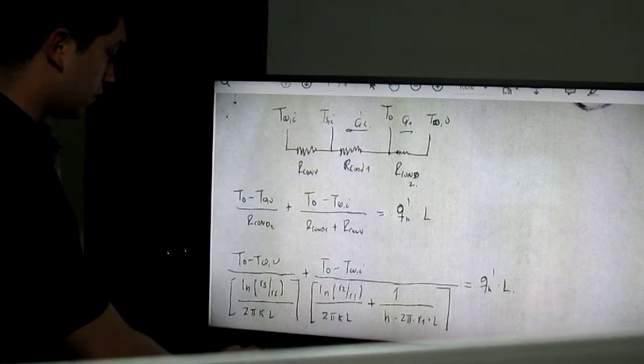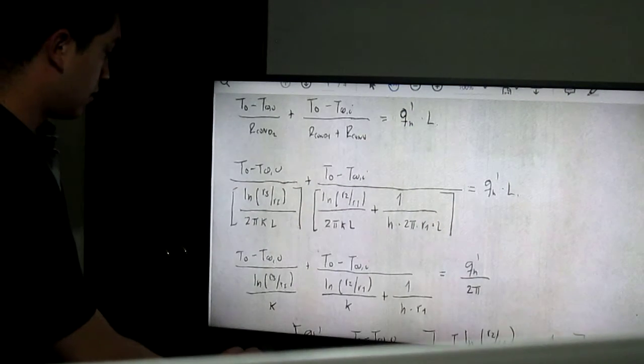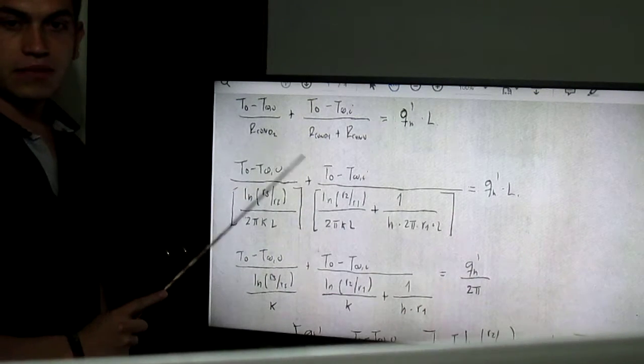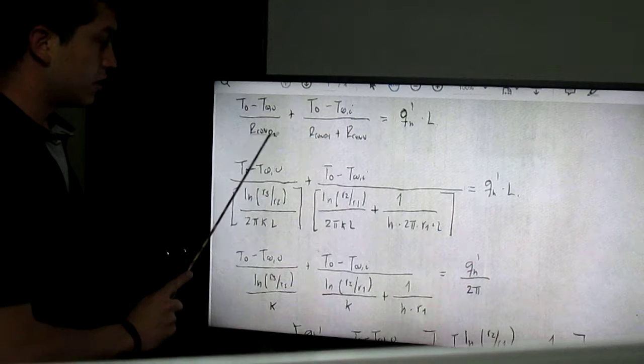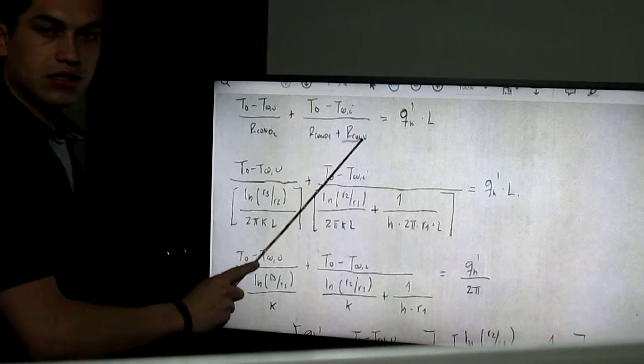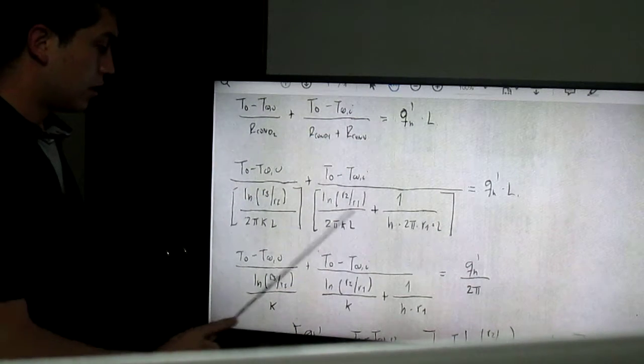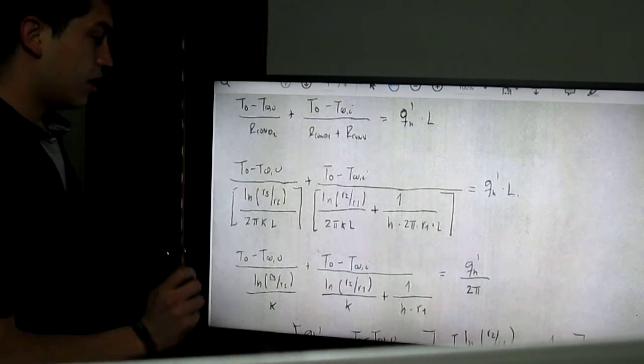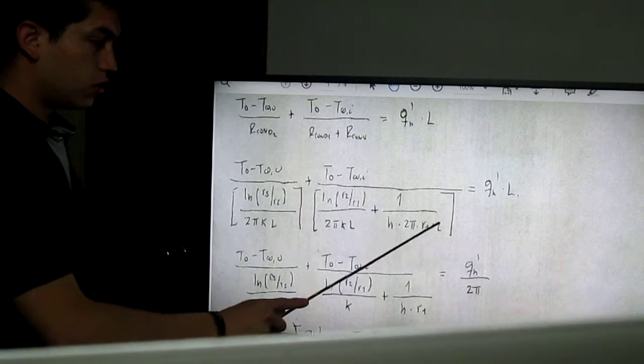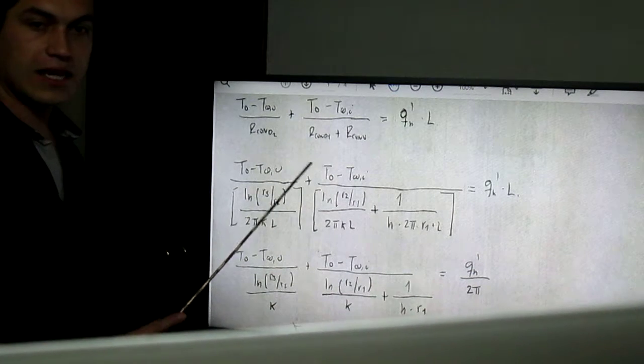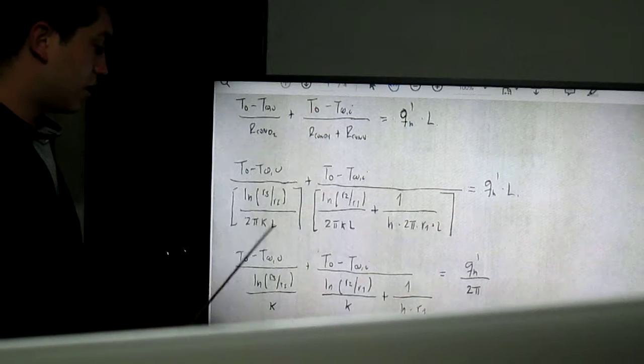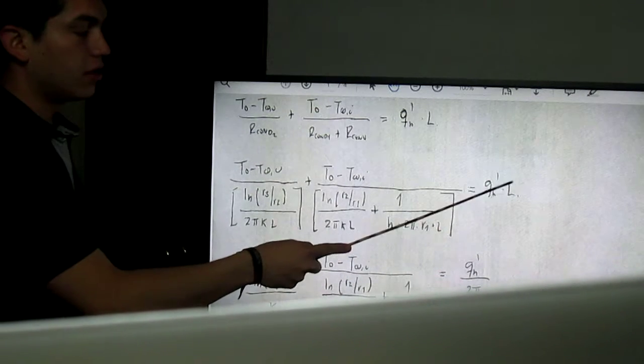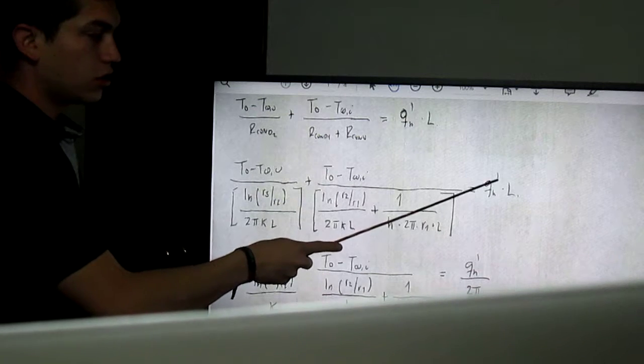We replace the values of the resistance conductive and the resistance convective right here in these three points. And we have to cancel the longitudes and the 2 pi to divide the heat flow, the Q sub H.